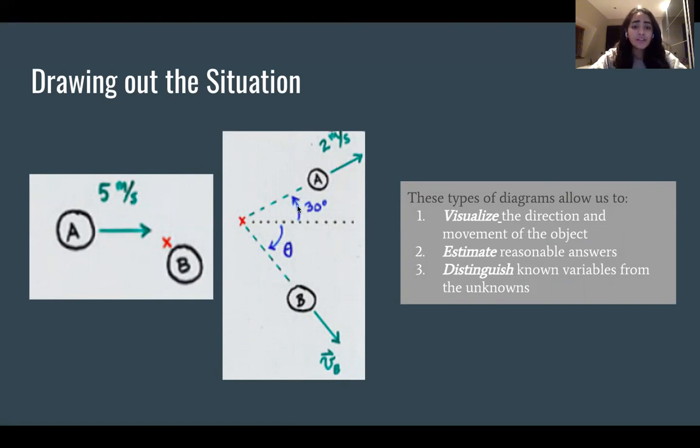For example, if you look here, we know that this angle is greater than 30. So it must be some value greater than 30, and if we get 2 degrees it doesn't make that much sense.